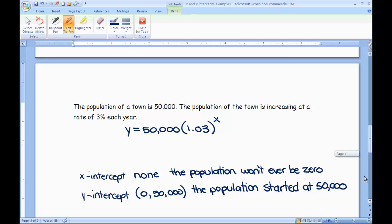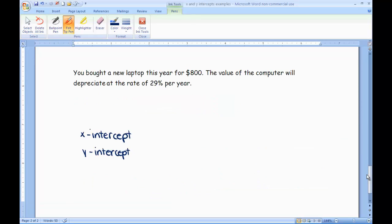Let's look at one more example. You bought a new laptop this year for $800. The value of the computer will depreciate at the rate of 29% per year. So depreciate means that the value is going down 29% every year. And again, think about the input and the output. My x values are going to be the years. Every year it's going down. And the y values, or the output, is going to be the value of the laptop, how much it's still worth.